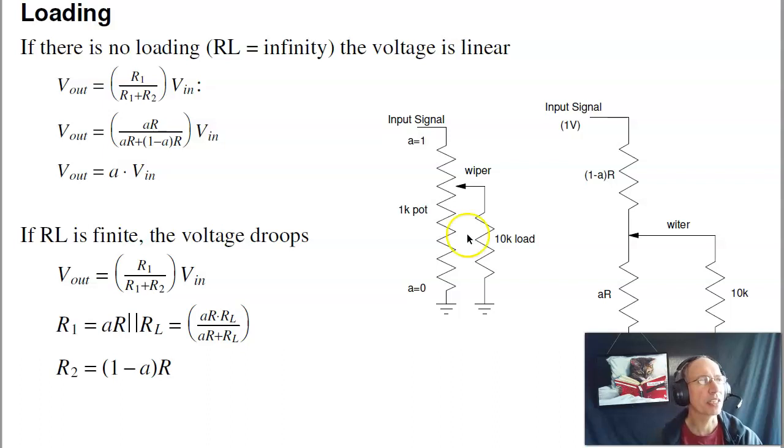You can calculate that. If I have a linear pot, so let's have A go from 0 to 1 as we go up and down. The resistance on the bottom side, that's R1, will be A times R. R2 is the remainder, 1 minus A times R. If there is no loading, that this isn't there, I've got the output voltage is just A times Vin. It's linear in A. If I now add a load, it's going to be the lower side is R1 in parallel with 10k. And then by voltage division, it will be that parallel combination divided by R1 plus R2.